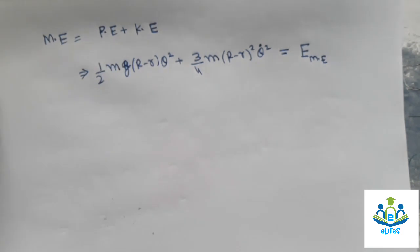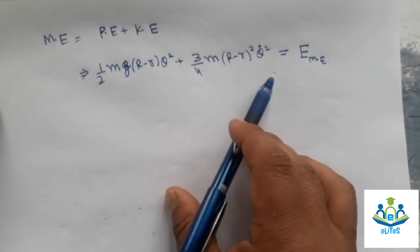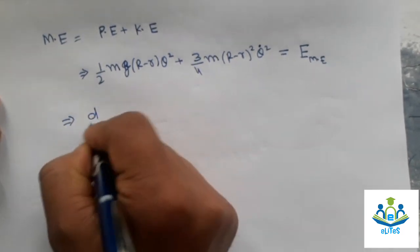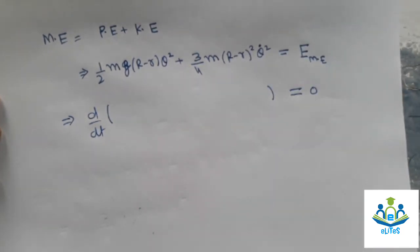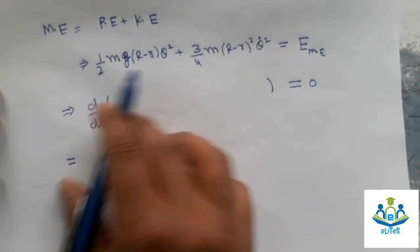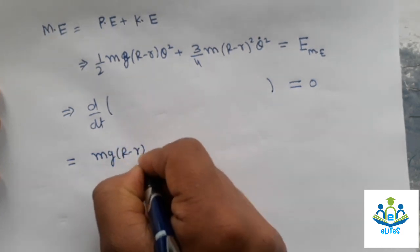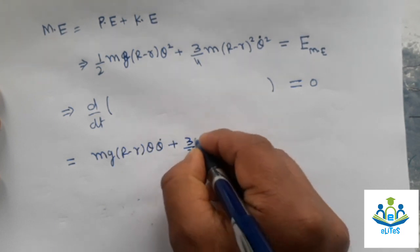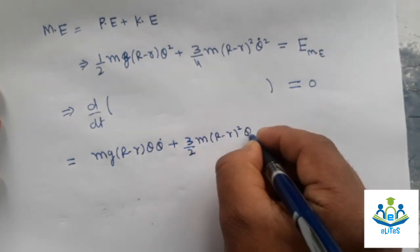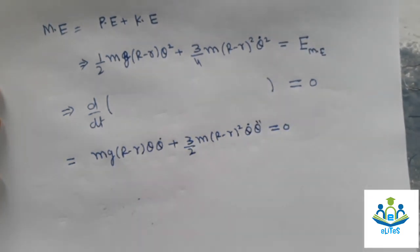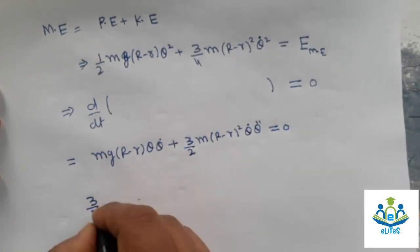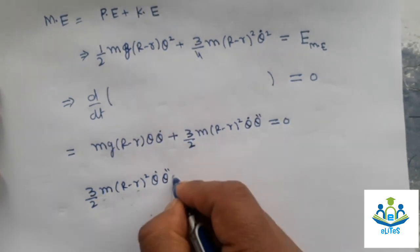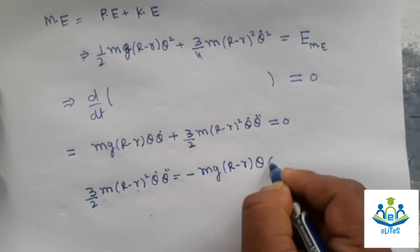The total mechanical energy equals potential energy plus kinetic energy. Since energy is conserved, the time derivative of total energy is zero. Differentiating: Mg(R minus r) theta theta-dot plus three-halves m(R minus r)squared theta-dot theta-double-dot equals zero. Rearranging: three-halves m(R minus r)squared theta-dot theta-double-dot equals minus Mg(R minus r) theta theta-dot.